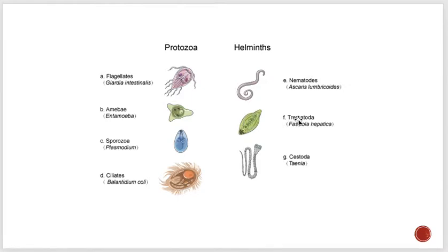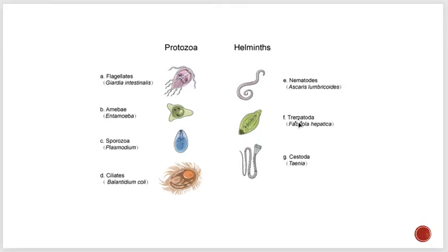When we talk about helminths, there are two main groups: one is called flatworms and one is called nematodes. The flatworms are further classified into trematodes and cestodes. Cestodes are also called tapeworms, and trematodes are also called flukeworms.